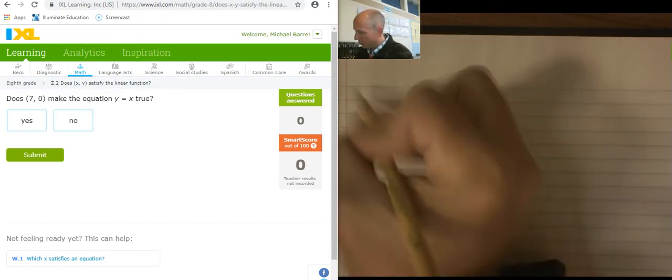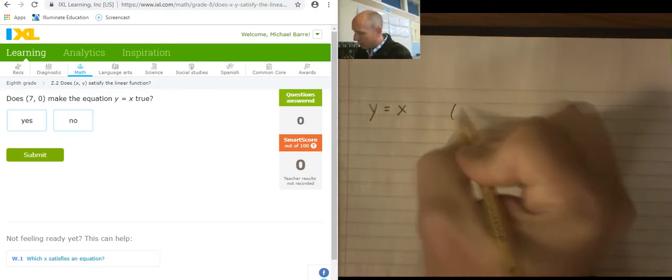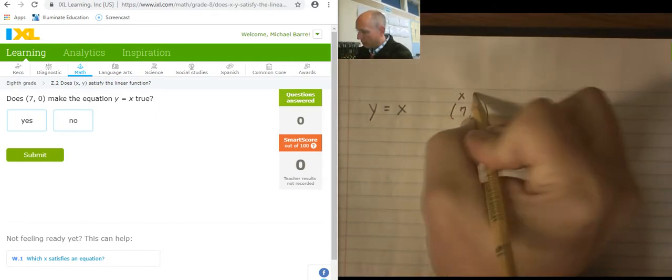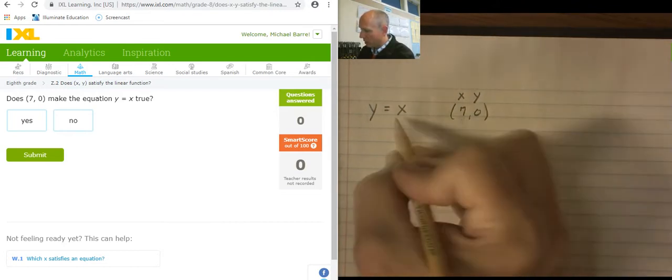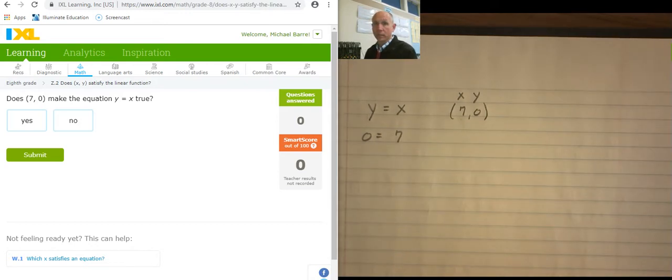So the question is this, if this is the function y equals x, does 7 comma 0 make it true? This is the x, this is the y. I'm just going to plug it in. So I put the x right here, 7, but the y right here is 0. Is that true or false? Does 0 equal 7? That's false. Does it make it true? No.